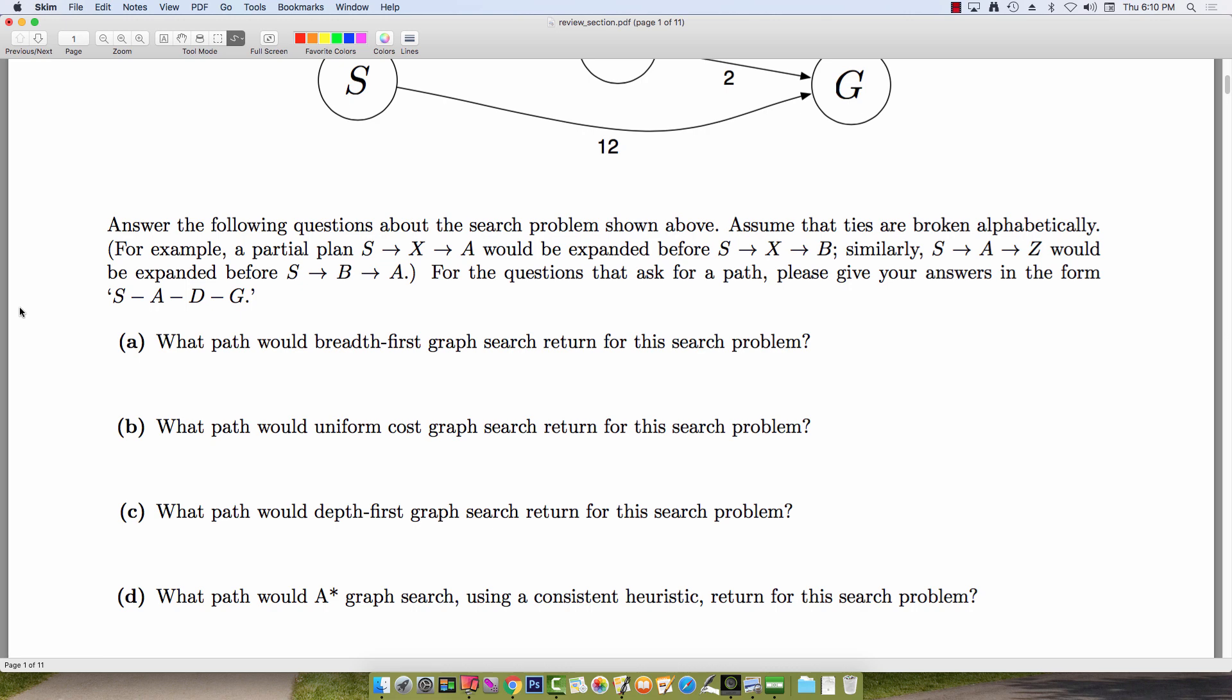For breadth-first search, we'll be using a first-in-first-out queue. For uniform cost search, we'll be using a priority queue, where the priority is given by the total cost of the path to reach that node from the start node. For depth-first search, we'll be using a last-in-first-out queue.